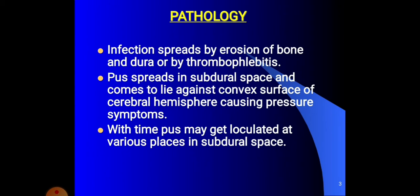Pathology. Infections spread by the erosion of the bone and the dura by thrombophlebitis, and the pus spreads to the subdural spaces, coming to lie against the complex surface of the cerebral hemisphere, causing pressure symptoms. With time, pus may get loculated at various places in the subdural spaces.